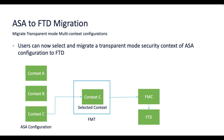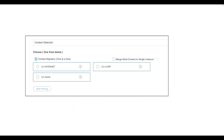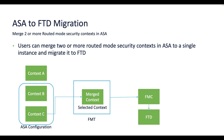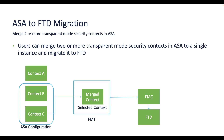After uploading the configuration, the tool will provide the user with the option of selecting one from the list of identified contexts. The user will be able to migrate a single transparent mode security context one at a time, as well as merge two or more transparent mode contexts in ASA to a transparent mode instance and migrate it to FTD.